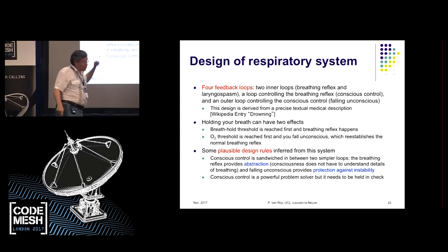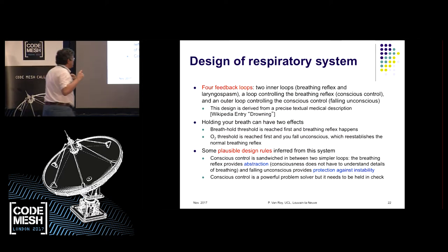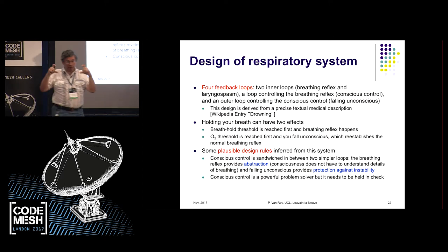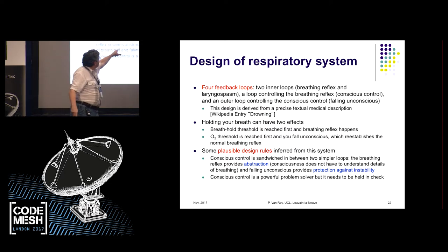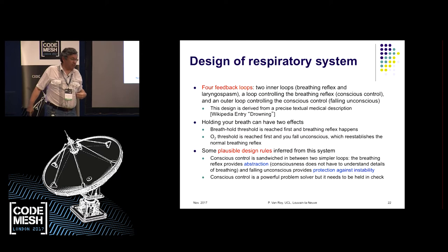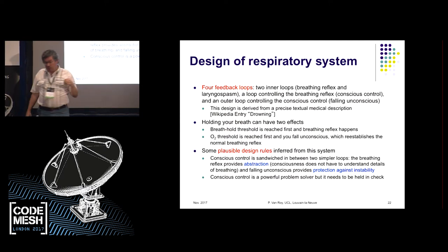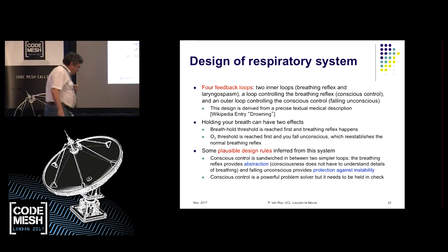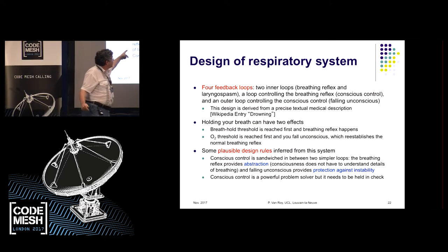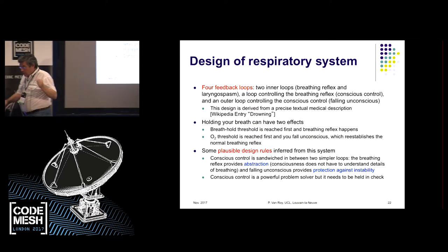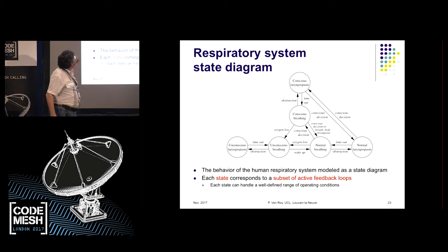The interesting design element is the conscious control block, which is much, much smarter. All the other blocks are very simple; conscious control is very smart. This block is extremely intelligent and is sandwiched between two simpler ones. The breathing reflex gives abstraction — conscious control doesn't have to know how to move every single muscle in the lung. There's also protection against instability: conscious control is very powerful, but because of that power it may go wrong — so there's protection against that.